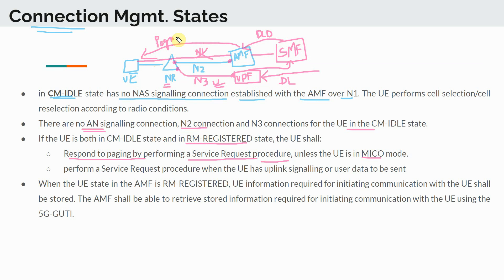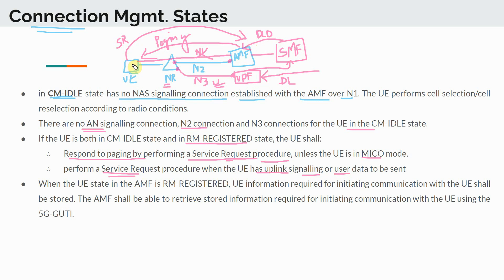The AMF sends a page, and the UE responds to that page with a process called the service request procedure. This is how a UE in idle mode accesses the network — by responding to the network and performing the service request procedure. The UE will also perform a service request when it has uplink signaling or user data to send.